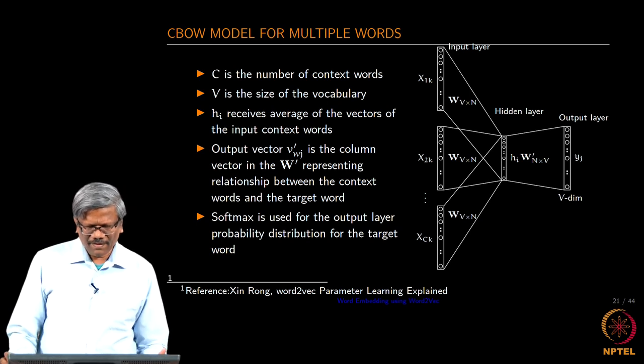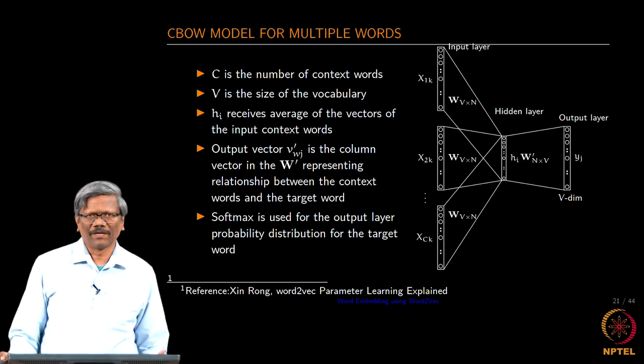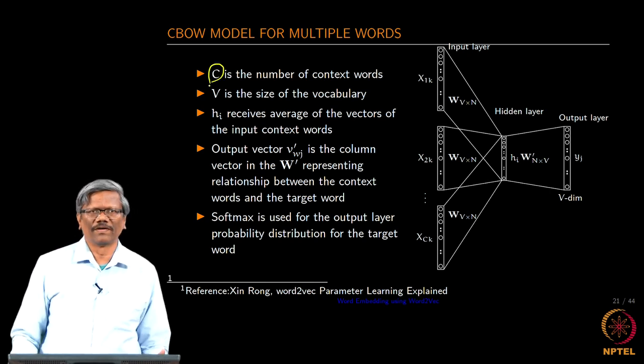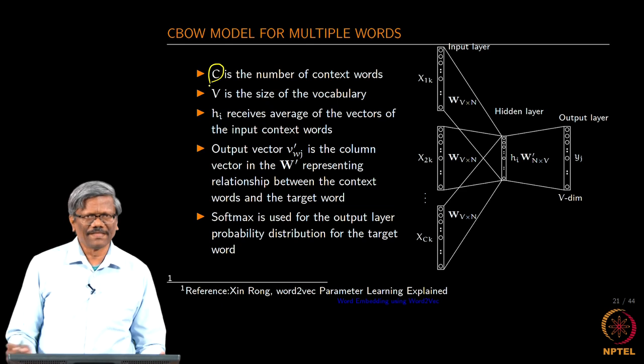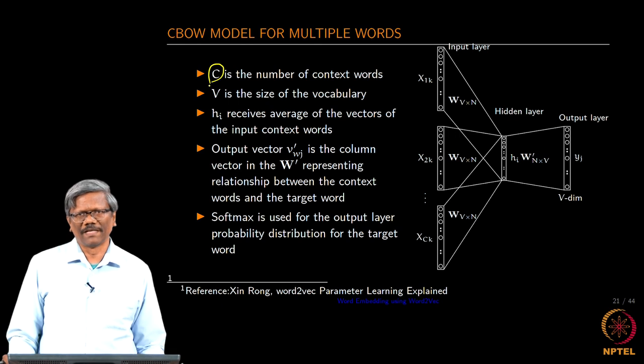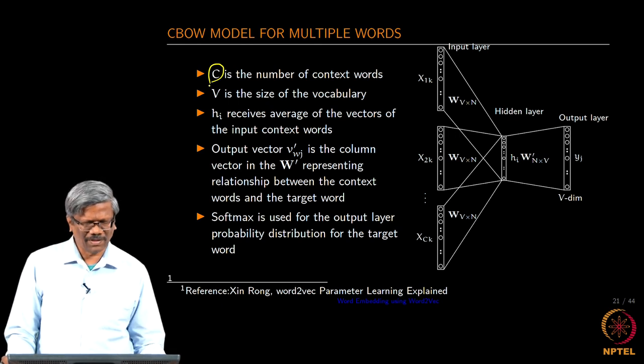In this case, we are going to be taking more than one word as a context word right. So, in this case C is the number of context words and then V is the size of the vocabulary which can vary from 10 to 1 million depending on the size of your corpus.